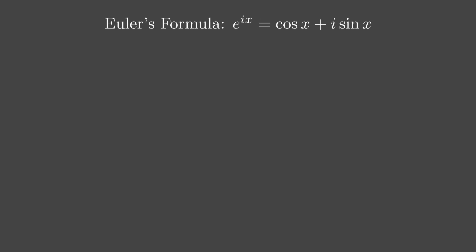Hey there, let's dive into a journey through Euler's formula, one of the most beautiful equations in math. E to the ix equals cos x plus i sine x. We're going to break it down step by step, keeping it clear and engaging like we're exploring a treasure map together. Ready? Let's go.